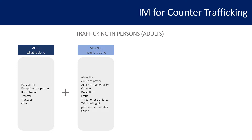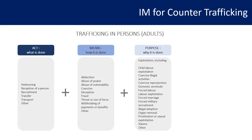The third component is Purpose — exploitation. Exploitation is not defined by the Palermo Protocol; however, depending on national legislations, it may be defined differently. Examples of forms of exploitation that IOM workers might encounter include labour exploitation, coercive illicit activities such as stealing or selling drugs, coercive reproduction, domestic servitude, forced labour, forced marriage, forced military recruitment, illegal adoption, organ removal, prostitution or sexual exploitation, slavery, and others.